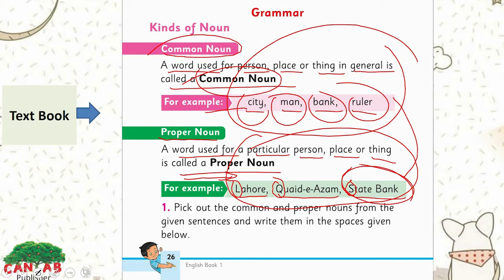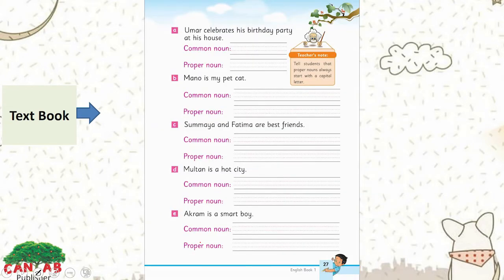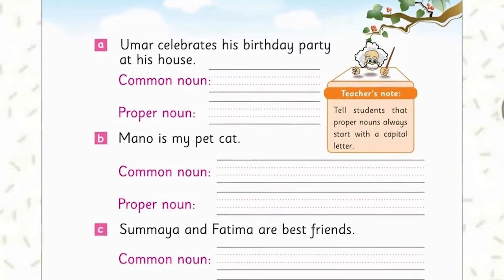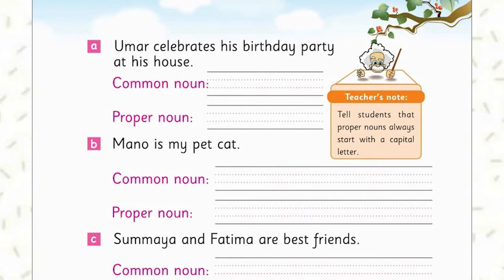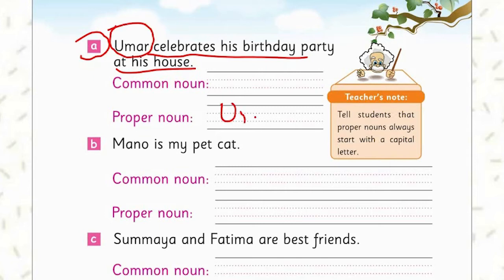Now let's do the exercise. Pick out the common and proper nouns from the given sentences and write them in the spaces given below. Always remember that proper nouns start with a capital letter. Sentence A: 'Umar celebrates his birthday party at his house.' The proper noun is Umar — it has the capital letter. The common noun is house.